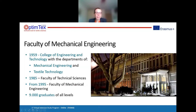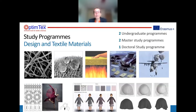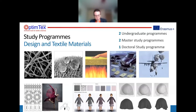In 1985 it became Faculty of Technical Science, and from 1995 it became Faculty of Mechanical Engineering. The faculty now has more than 9,000 graduates of all levels. In our institute we have different study programs at all levels in Design and Textile Materials: two undergraduate programs, two master programs, one doctoral program, and recently also a master program in Industrial Engineering combined with mechanical engineering.